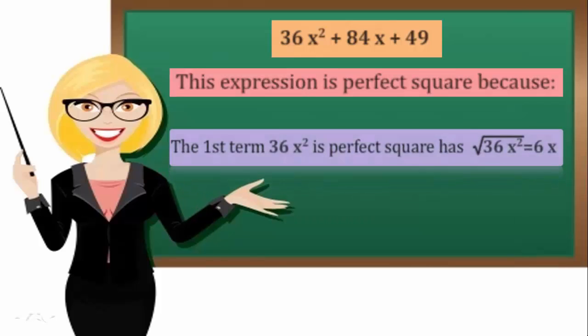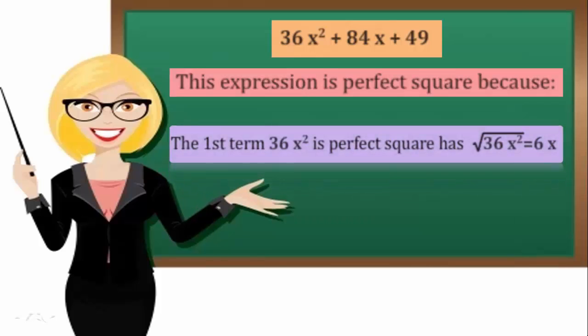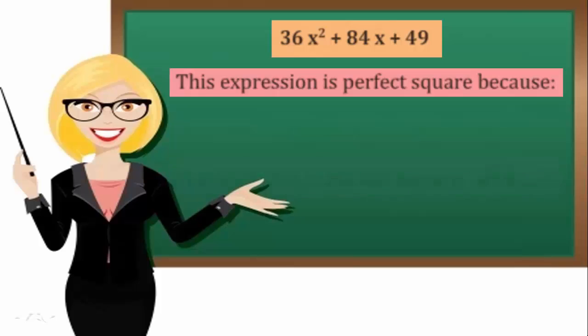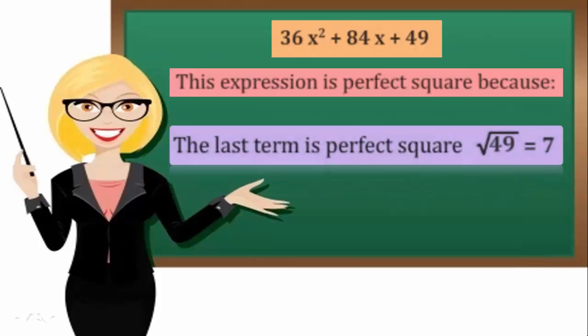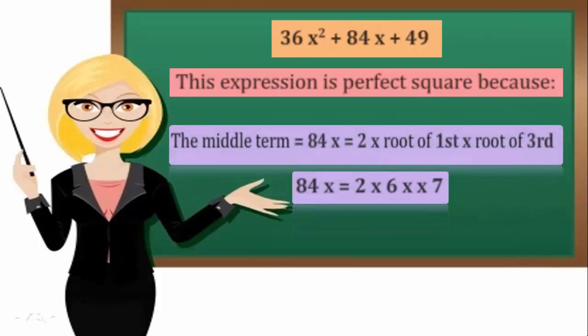Number 1: The first term, 36x squared, is a perfect square with a square root of 6x. Number 2: The last term, 49, is a perfect square with a square root of 7. Number 3: The middle term equals 84x, which is 2 times the square root of the first term times the square root of the last term.